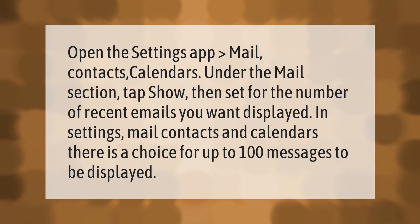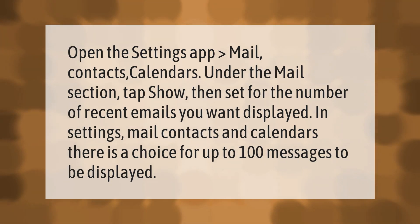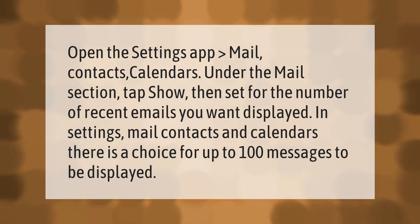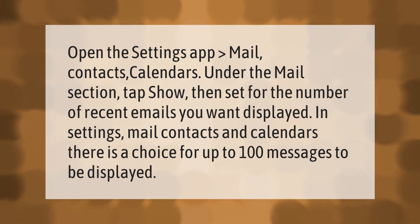Open the Settings app, go to Mail, Contacts, Calendars. Under the Mail section, tap Show, then set the number of recent emails you want displayed. In Settings, Mail, Contacts, and Calendars, there is a choice for up to 100 messages to be displayed.